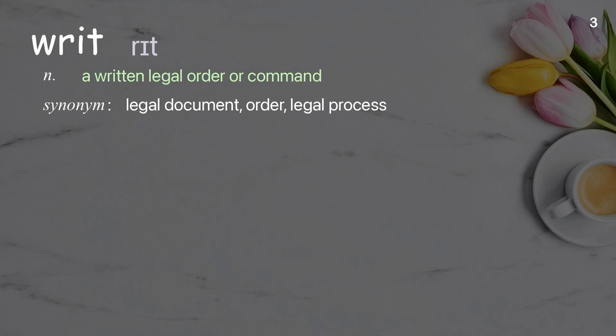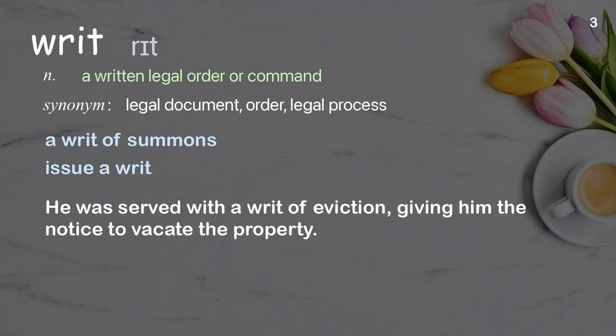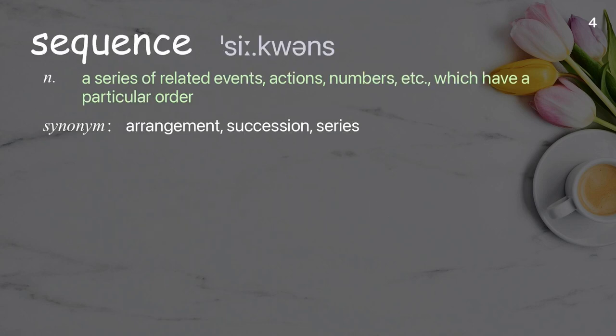Writ: a written legal order or command. Examples: a writ of summons, issue a writ. He was served with a writ of eviction giving him notice to vacate the property. Sequence: a series of related events, actions, numbers, etc., which have a particular order.